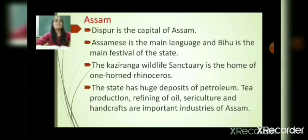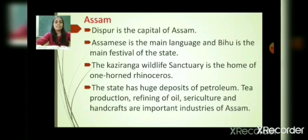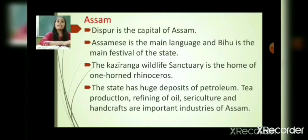Now, Assam. Dispur is the capital of Assam. Assamese is the main language and Bihu is the main festival of the state. The Kaziranga Wildlife Sanctuary is the home of the one-horned rhinoceros. The state has huge deposits of petroleum. Tea production, refining of oil, sericulture and handicrafts are important industries of Assam. Sericulture is the rearing of silkworms.